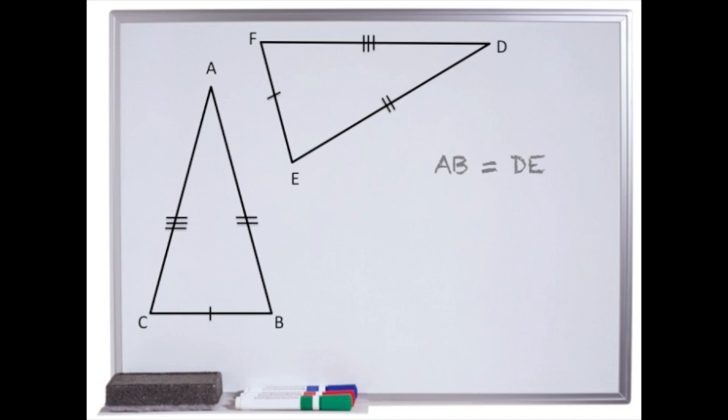We can see that AB is the same length as DE. Not by looking at the lengths and seeing them with our eyes, but by looking at the little symbols used to show us that those lengths are the same. We can also see that BC is the same as EF. And finally, that CA is the same as FD.